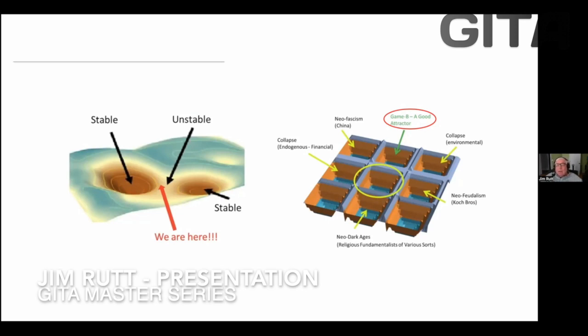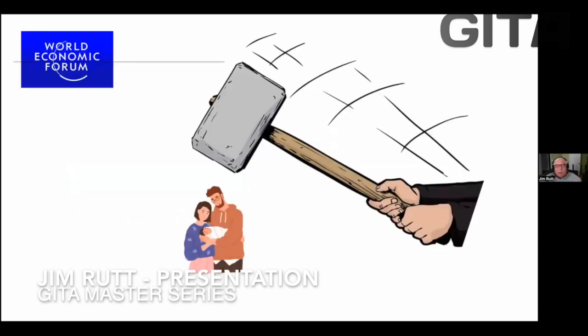So the whole idea of Game B is to build a good attractor, a good place for the marble to land when we move from current attractor, Game A, into the unstable region, and then we need to build in an attractor to fall into, which we call Game B.